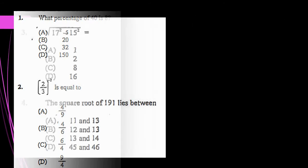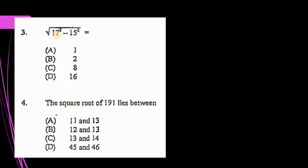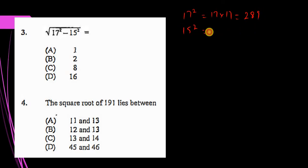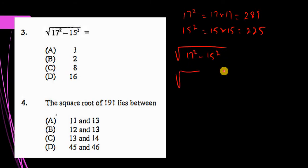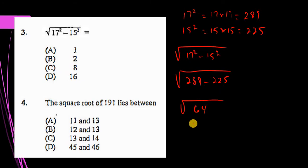Let's look at question 3: the square root of 17 squared minus 15 squared. There are two ways we can work this out. By knowing the squares of numbers in the teens: 17 squared is 17 times 17, which is 289. And 15 squared is 15 times 15, which is 225.